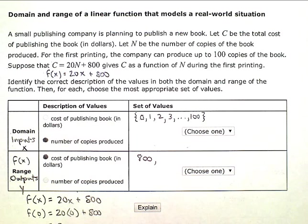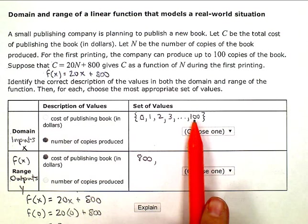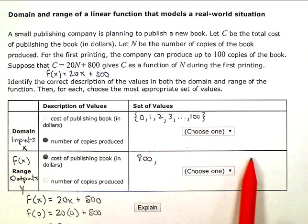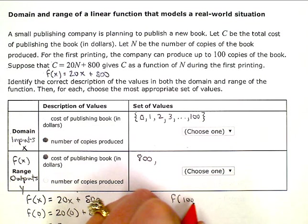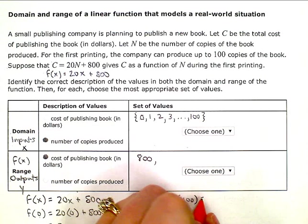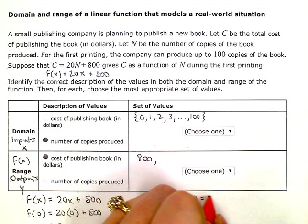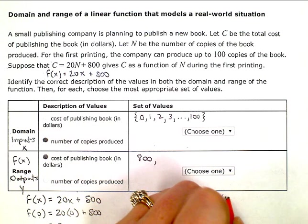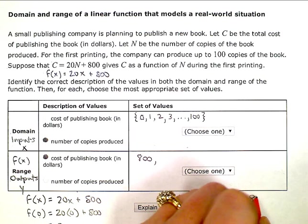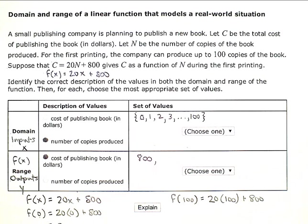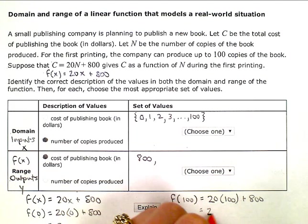So the minimum cost is going to be $800 to set up the printing, maybe for editing. And then I want to know, well, if I print all 100 at the other end, what's my maximum cost? So I want to know, what's the function value at 100? So I substitute in 100, so 20 times 100 plus 800. So 20 times 100 is 2,000 plus another $800 is going to be $2,800.